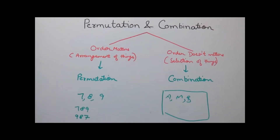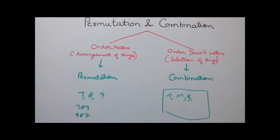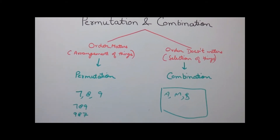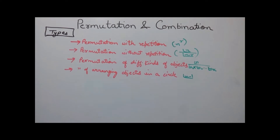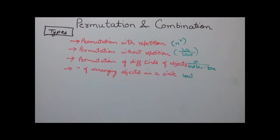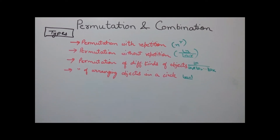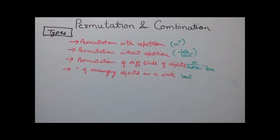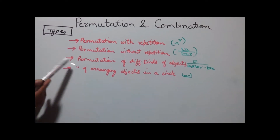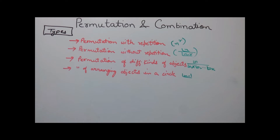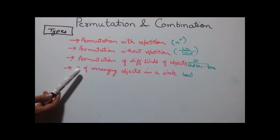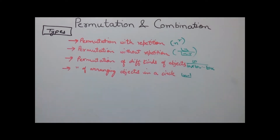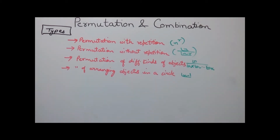In this class we would be discussing in detail on permutation. There are four types of permutation. First is permutation with repetition. Second is permutation without repetition. Third is permutation of different kinds of objects. Last is permutation of arranging objects in a circle.